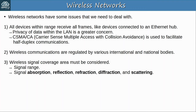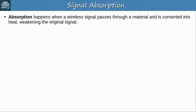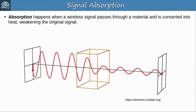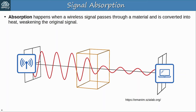Absorption happens when a wireless signal passes through a material and is converted into heat, weakening the original signal. For example, a wireless access point sends a signal, but the receiving laptop is on the other side of a wall. The wall absorbs some of the signal, resulting in a weaker signal by the time it reaches the laptop. Reflection happens when a signal bounces off of a material, for example metal. This is why Wi-Fi reception is usually poor in elevators, because the signal bounces off the metal and very little penetrates into the elevator.